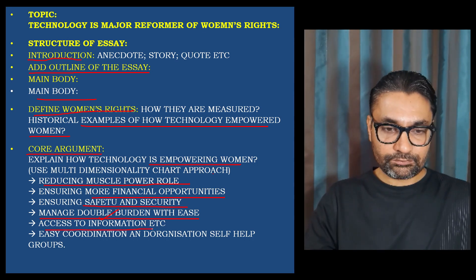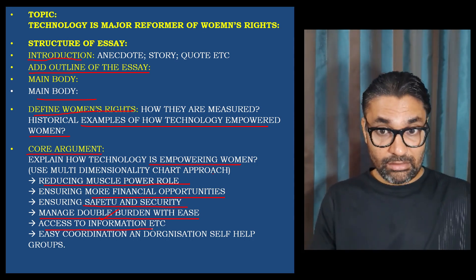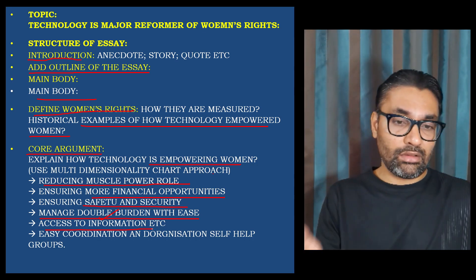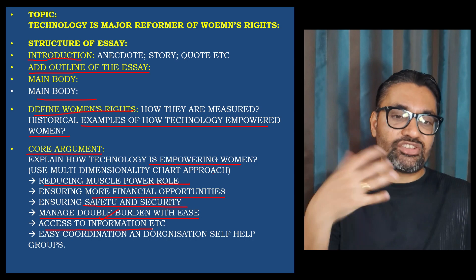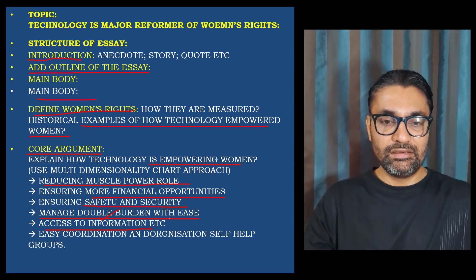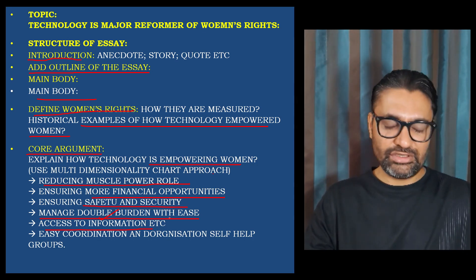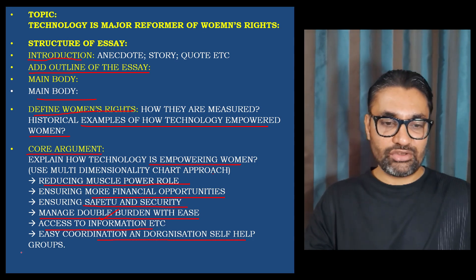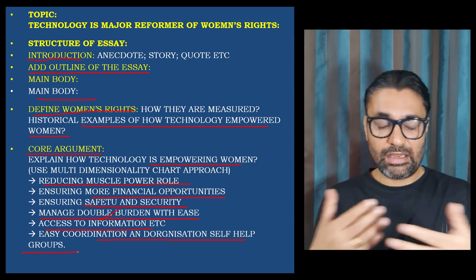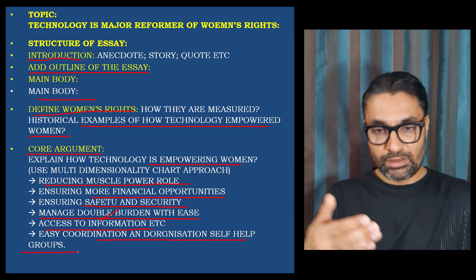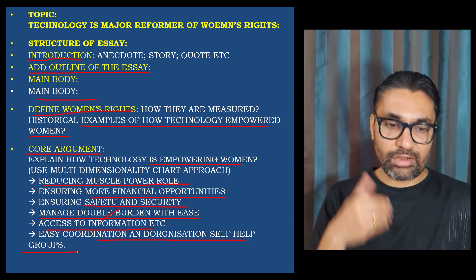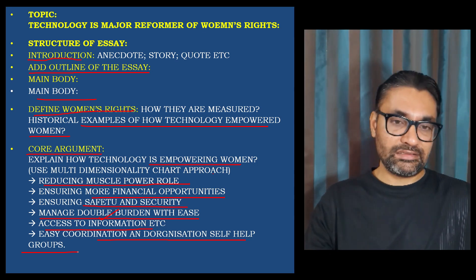Then access to information — a female can easily access information, whether health related, social movements, or their legal rights. They can coordinate and get information through Google and other sources. Informational empowerment leads to other empowerment and knowledge. Then easy coordination and organization of self-help groups — females could create WhatsApp groups, online groups, coordinate in distant places and different countries where females are working, share marketing information, reorganize together, and through their self-help groups help each other realize their rights.